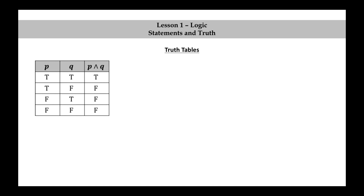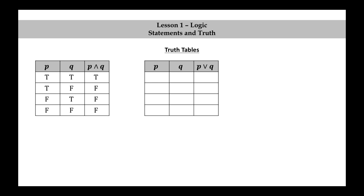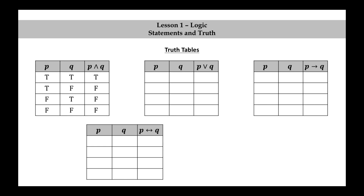Let's also look at the truth tables for the other logical connectives that we're familiar with: P or Q, P implies Q, P if and only if Q, and not P. Since P or Q involves a binary connective — in other words there are two propositional variables — the truth assignments are the same as in the last example.